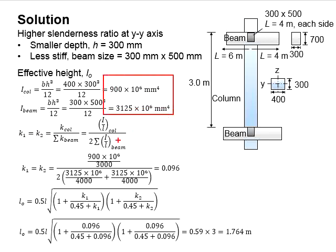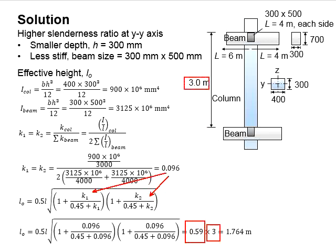Substitute the relevant values into the equations. The effective height of the column is 3 meters and the length of the beam for the incoming beam is 4 meters for each side. The k1 and k2 is found to be 0.096. Substitute the value into the equations. You will obtain the ratio equal to 0.59 to be multiplied with the effective height of the column. You will obtain 1.764 meters for L0.